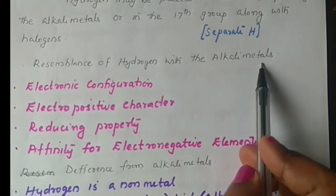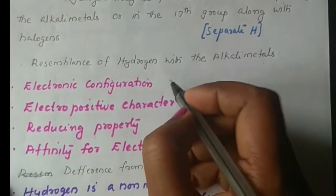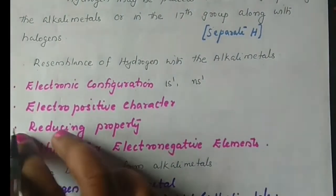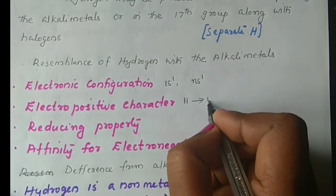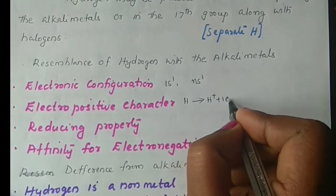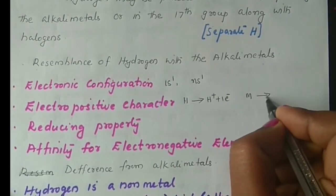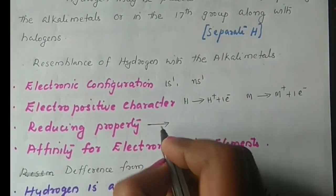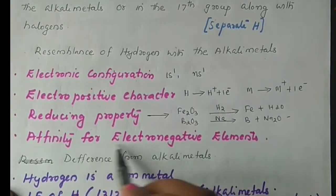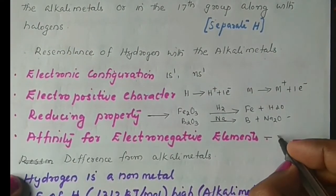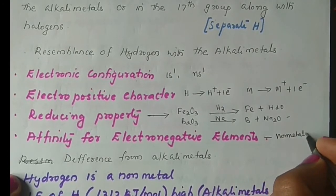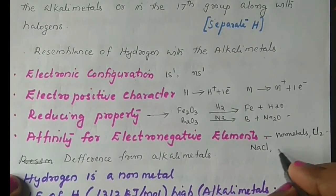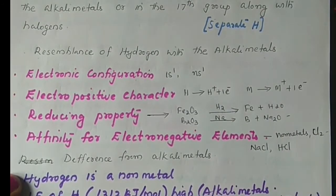To summarize the resemblance of hydrogen with alkali metals: first, electronic configuration — hydrogen has 1s1, alkali metals have ns1. Second, electropositive character — hydrogen forms H+ and alkali metals form M+ ions. Third, reducing character — both are good reducing agents. Fourth, affinity for electronegative elements — both react with non-metals such as chlorine; alkali metals form sodium chloride and hydrogen forms hydrogen chloride.